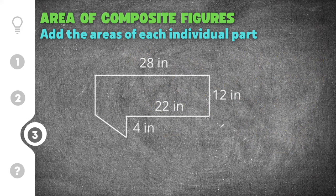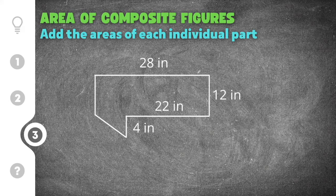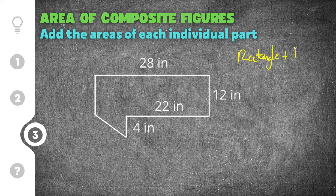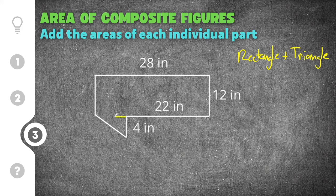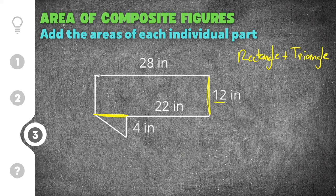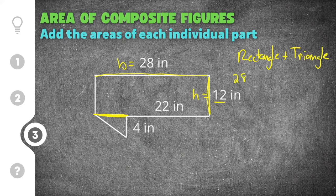The last practice problem gives us another composite shape made up of a rectangle and a triangle. We'll add the area of the rectangle plus the area of the triangle. We can draw a line to break it into two separate shapes. The rectangle has a height of twelve and a full base length of twenty-eight, so we do twenty-eight times twelve for the rectangle.